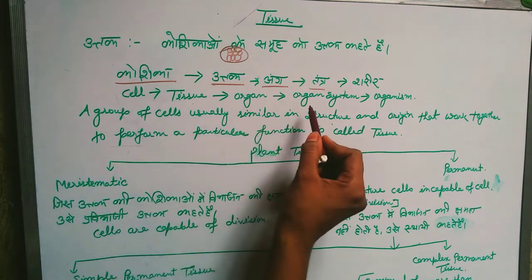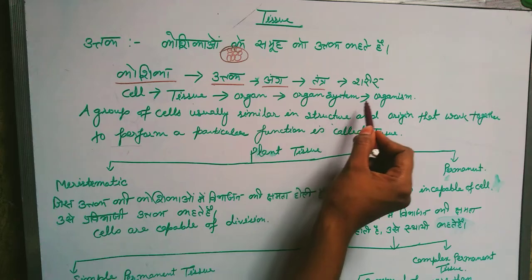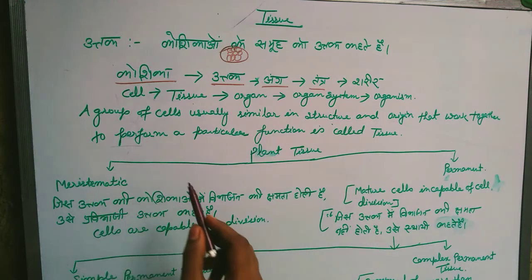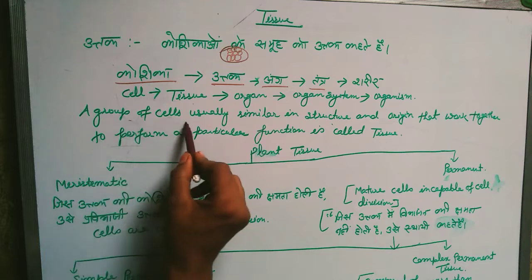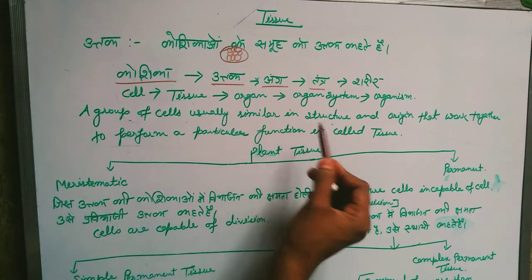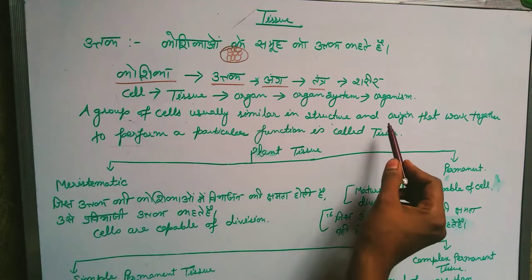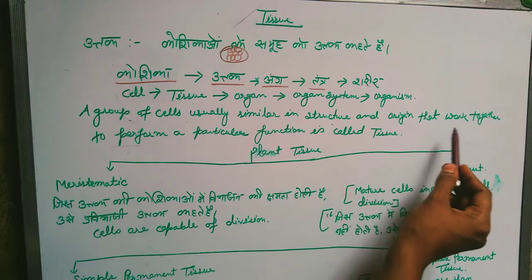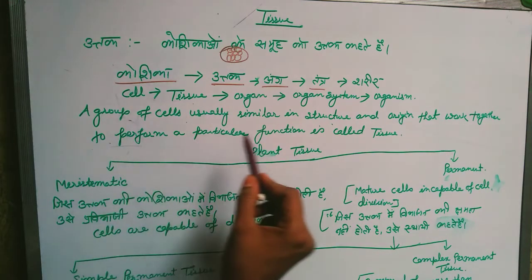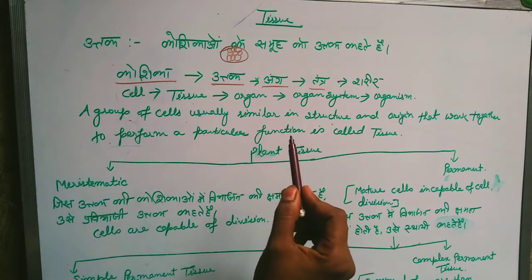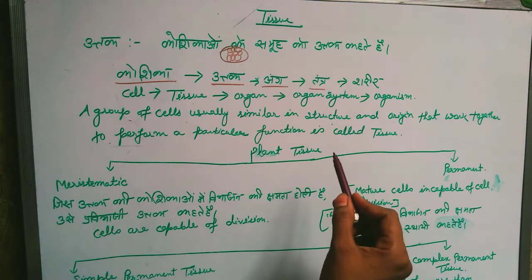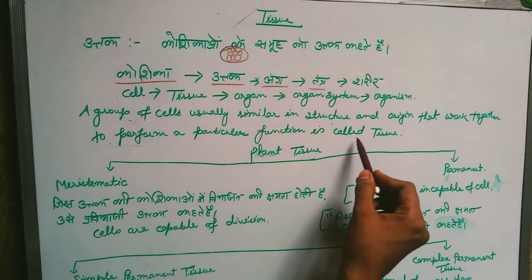From tissue to organ to organ system, we make an organism. So a group of cells, usually similar in structure and origin, that work together to perform a particular function, is called tissue.